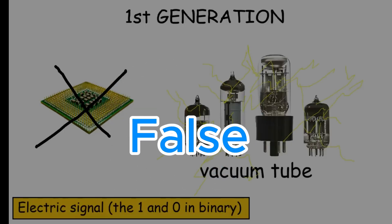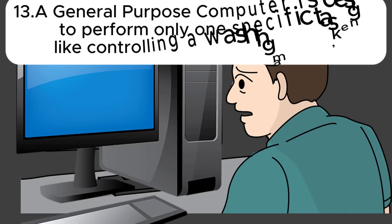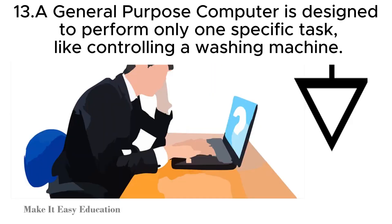Thirteen: a general purpose computer is designed to perform only one specific task, like controlling a washing machine.